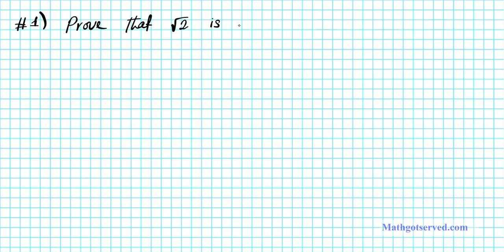So for our first proof by contradiction or indirect proof, we are to prove that the square root of 2 is irrational. So this is what we are going to prove. Let me go over the game plan with you so you can know the logic that's guiding my proof process. So this is the plan.